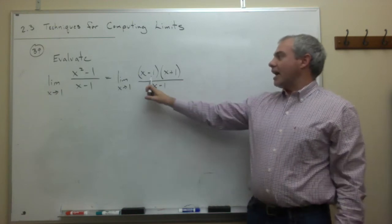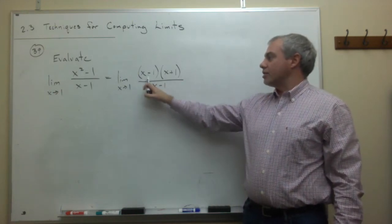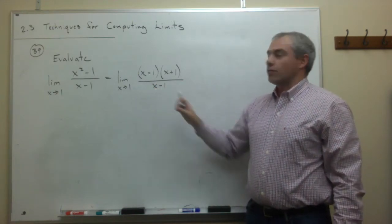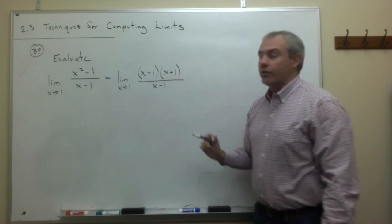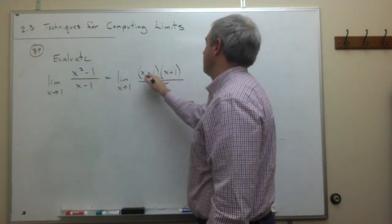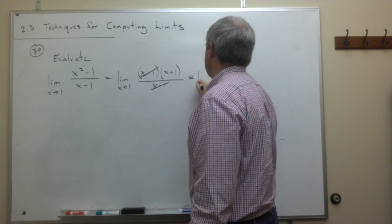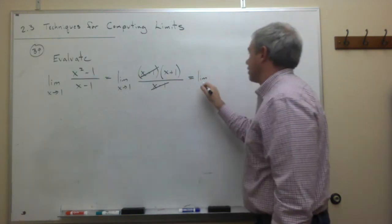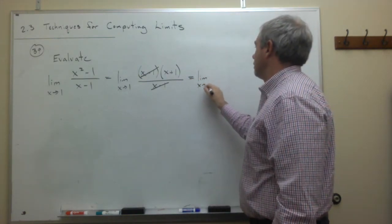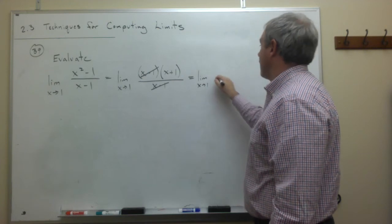Now you see that I have an x minus 1 on top and an x minus 1 on the bottom. Those cancel out, and I'm left with the limit as x goes to 1 of x plus 1.